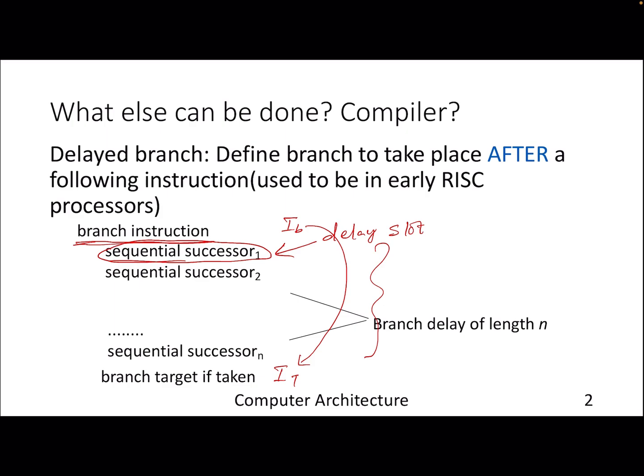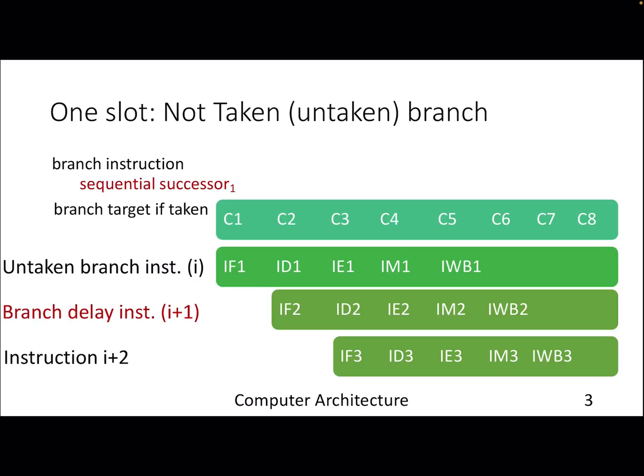This is actually an older phenomenon — it used to exist in earlier processors. Modern processors don't have this because it introduces complexity when interacting with sophisticated branch predictors, which we will see in future lectures. To understand the notion of the branch delay slot, let's assume we have one slot: given a branch instruction, before we jump to the target we can introduce one instruction.